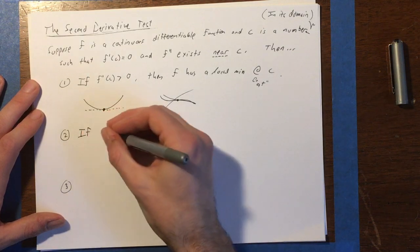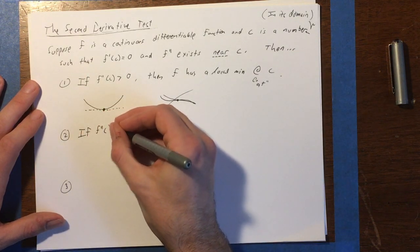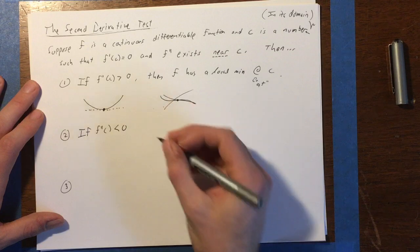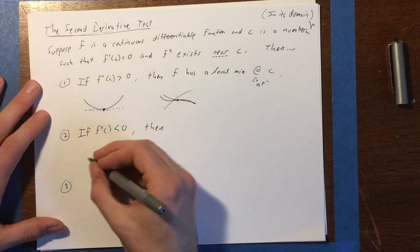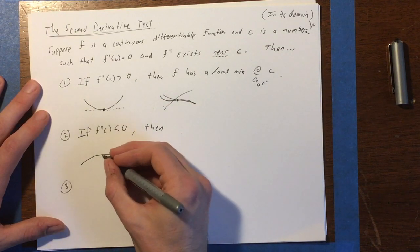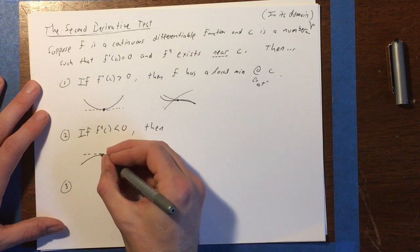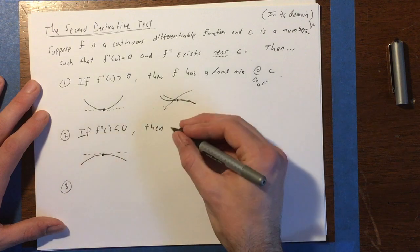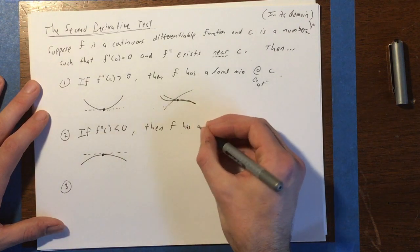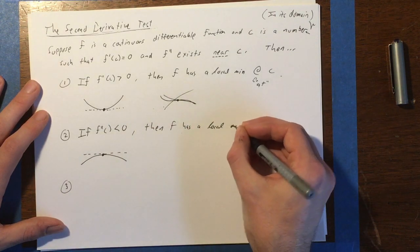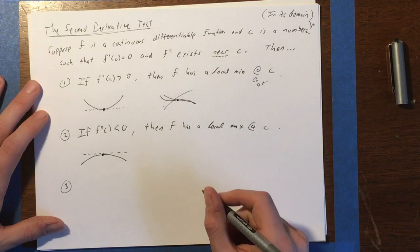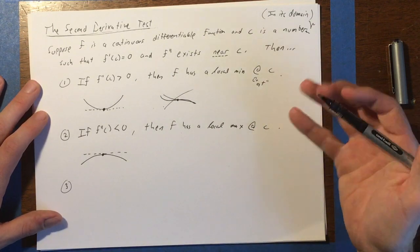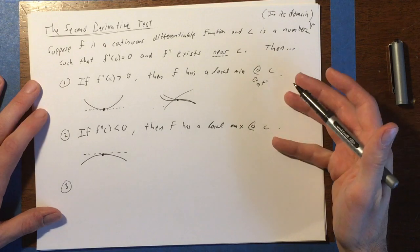Second case, if f double prime of c is less than zero, then let's draw the picture. Now we're talking about concave down, so now the point where you have your horizontal tangent line has got to be a maximum. So this is sort of the heart of the second derivative test, these two cases. This is when it's useful.